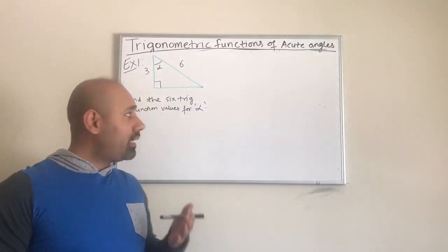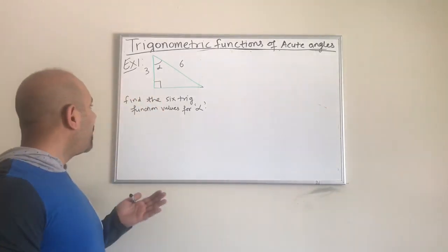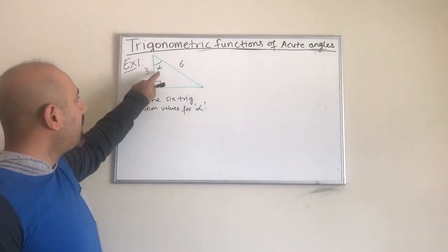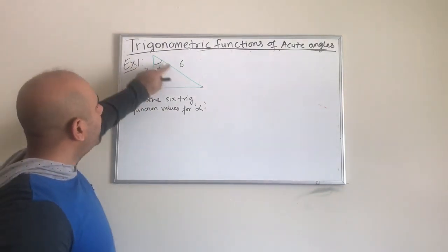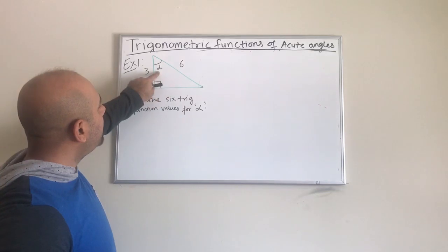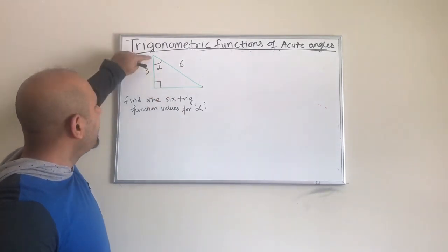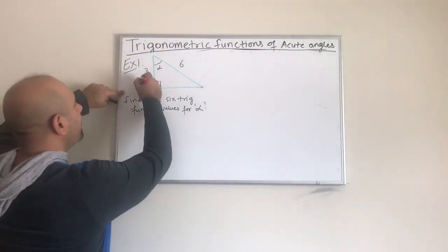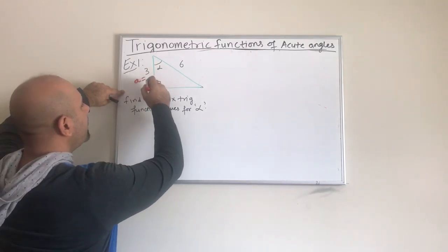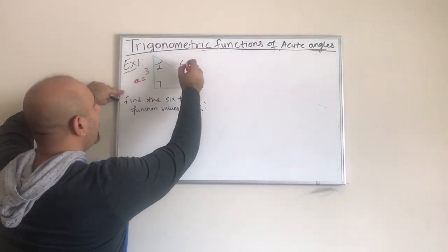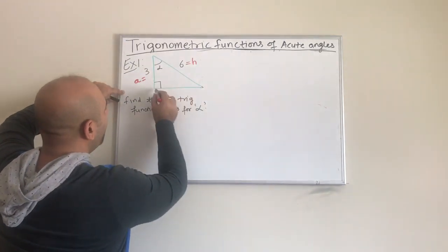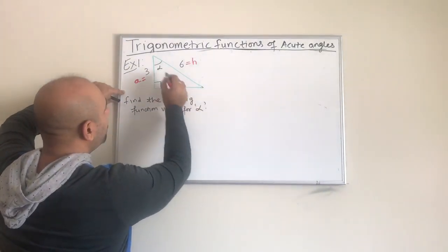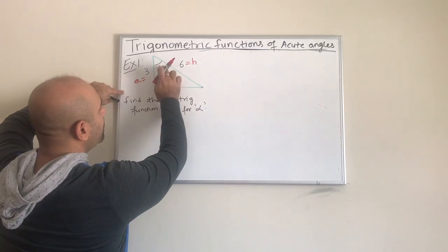Let us look at this example on finding or evaluating the six trig functions for the angle alpha. We already have a right triangle here. The hypotenuse of this right triangle is six. Based on this as my reference angle, this is going to be my adjacent side, which equals three, and this longest side of the right triangle is my hypotenuse.